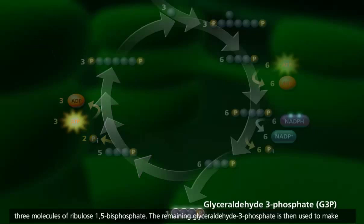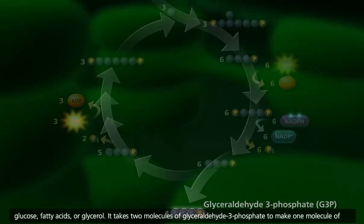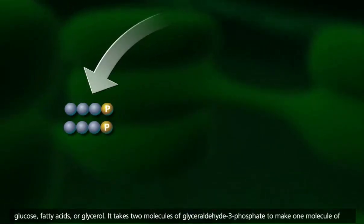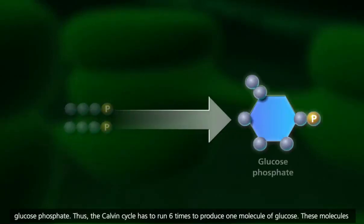The remaining glyceraldehyde-3-phosphate is then used to make glucose, fatty acids, or glycerol. It takes two molecules of glyceraldehyde-3-phosphate to make one molecule of glucose phosphate. Thus, the Calvin cycle has to run six times to produce one molecule of glucose.